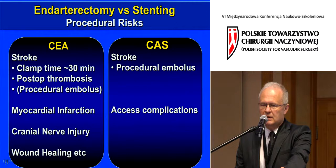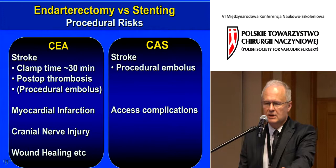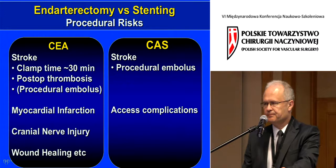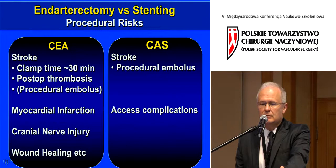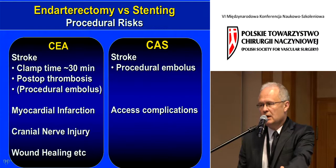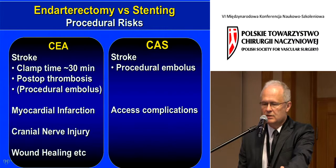It is important to realize that thrombotic complications develop quite differently when comparing endarterectomy and stenting. For carotid endarterectomy, the clamping time of about 30 minutes and immediate post-operative thrombosis represent the main stroke risk. The next complication is myocardial infarction. We must recognize this is a very morbid patient group. Endarterectomy also carries risk of cranial nerve injury and wound healing difficulties. Stenting, on the other hand, can cause stroke from periprocedural embolus, and we may see access-site complications.